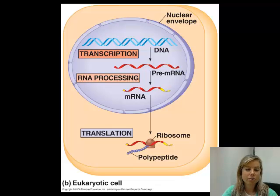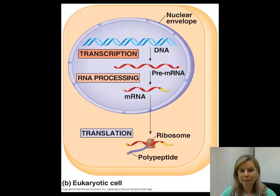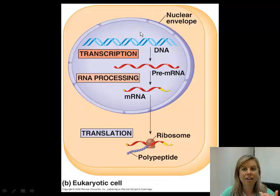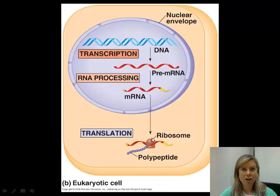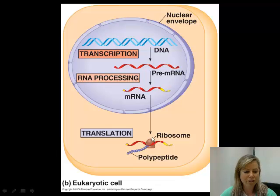So those are the stages and the basic reason why that happens. Transcription happens in the nucleus — that's DNA being transcribed into RNA, just a copy. Then RNA leaves the nucleus and goes out to the cytoplasm, and that's where translation happens, which is where the messenger RNA is actually made into a protein.